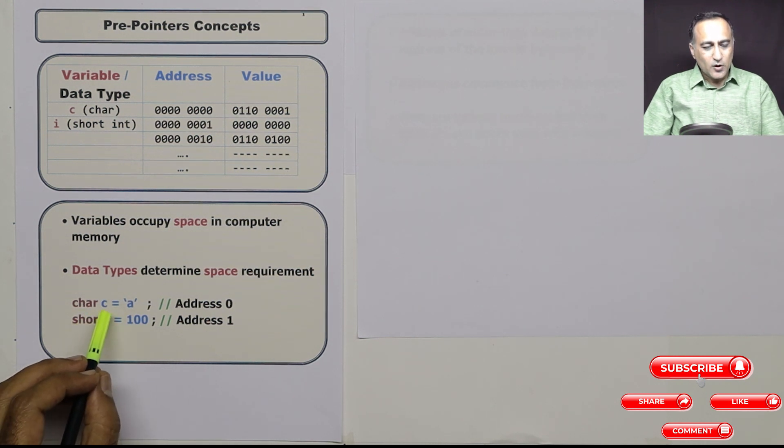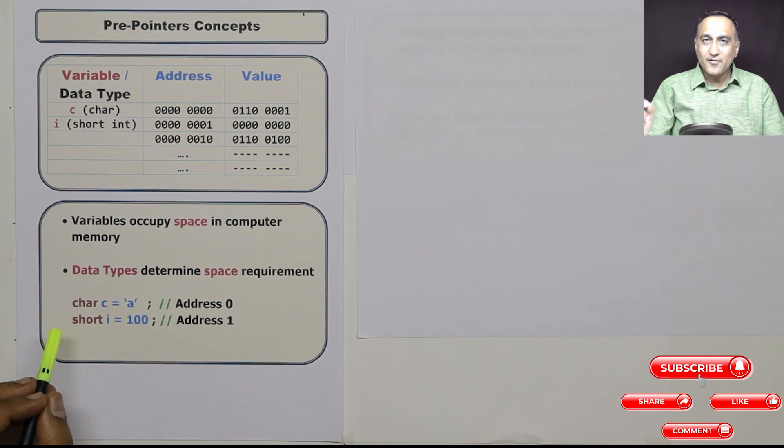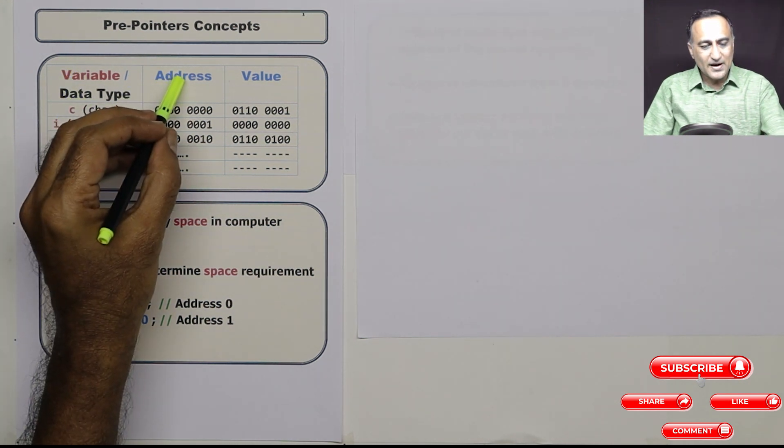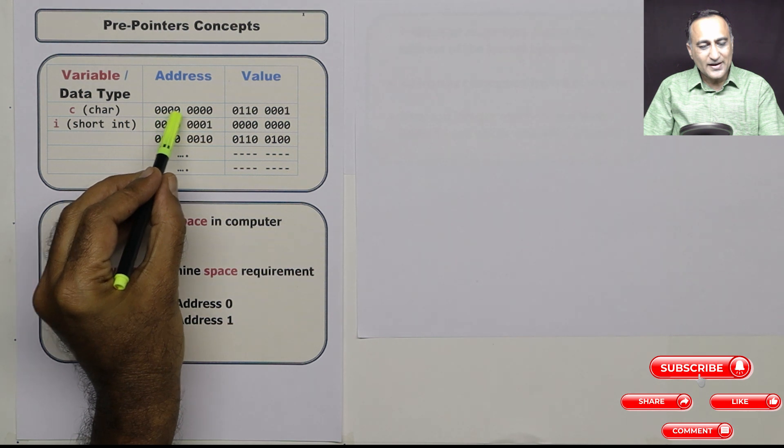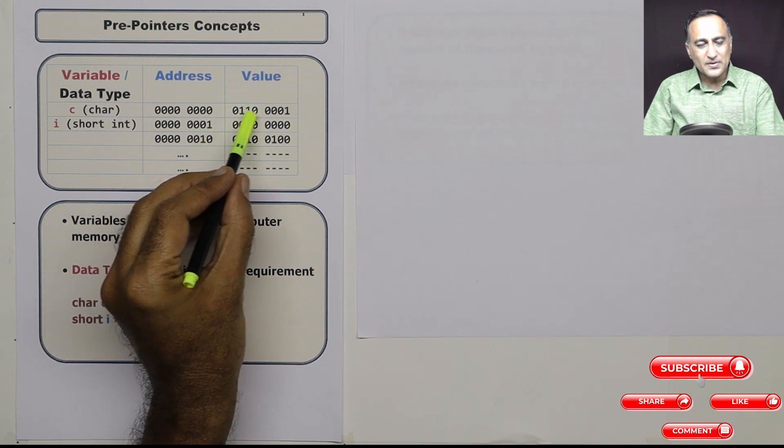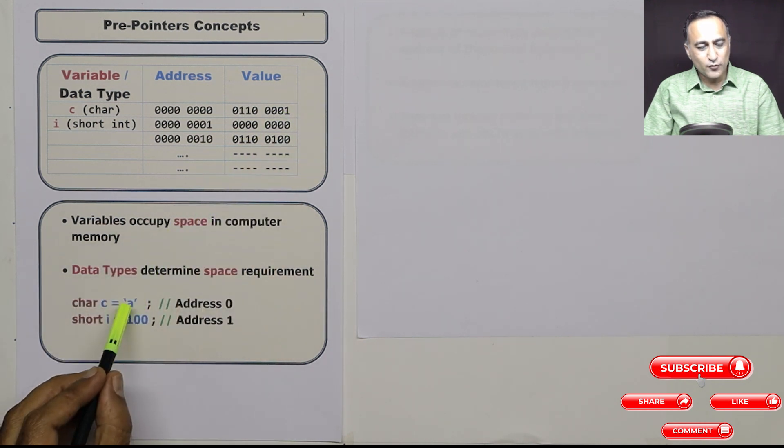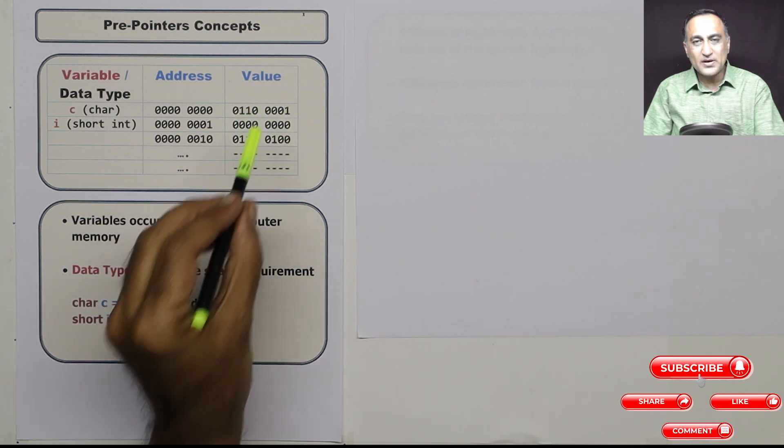So let's take a look at how c with the initial value A is going to be represented at address zero from a conceptual perspective. In this column I have the variable as well as the data type, in this column I have the address, and this column I have the value. So character c, assuming it is stored at address zero, this is address zero in binary. Its value in small a is going to be represented like this. This A if you transform it into binary, this is the ASCII value of small a, which actually happens to be 97.